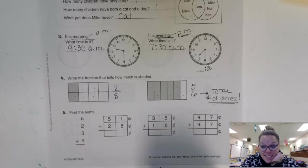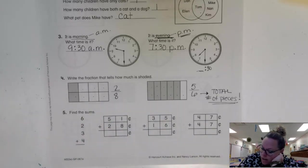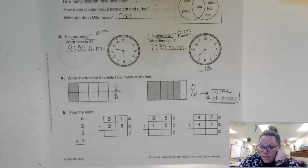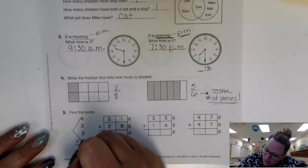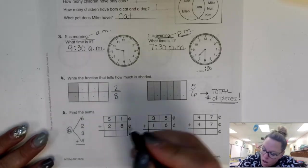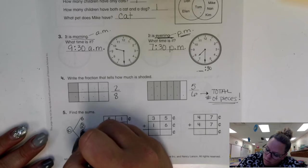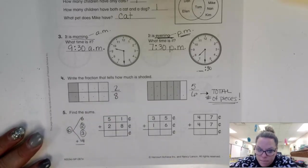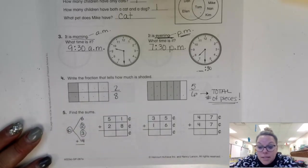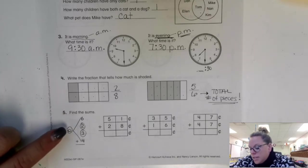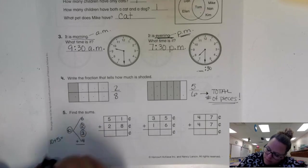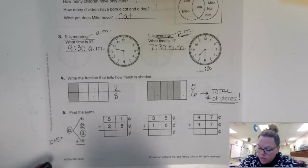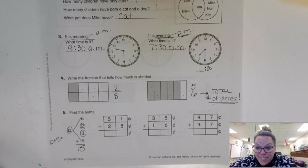Let's find some sums. Here we want to first look to find a sum of 10. I found one. Did you? Six and four. That's 10. And then we're left with two and three. Two plus three is five. Ten plus five is 15.